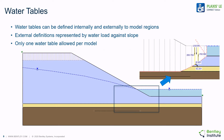The software allows water tables to be defined both internally and externally to model regions. If the water table line goes outside of the defined regions, then the water load is represented as a load against the slope equivalent to the water head load. Only one water table is allowed per model.